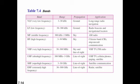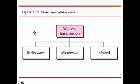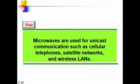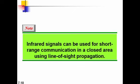Other wireless transmission waves include radio waves, microwaves, and infrared waves. Radio waves are used for multicast communication such as radio, television, and paging systems. Microwaves are used for unicast communication like cellular telephone, satellite networks, and wireless LANs. Infrared signals are used for short-range communication in a closed area using line-of-sight propagation. This covers all about transmission mediums — both wired and wireless — discussed in this lecture.